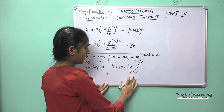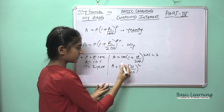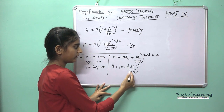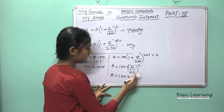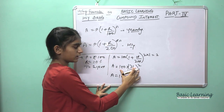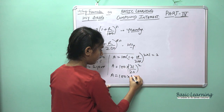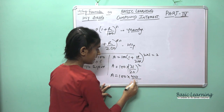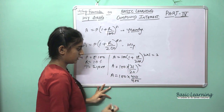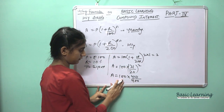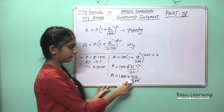We can reduce the zero or multiply it out: Amount = 100 × (21/20)². The square of 21 is 441 and 20² is 400, so Amount = 100 × 441/400.